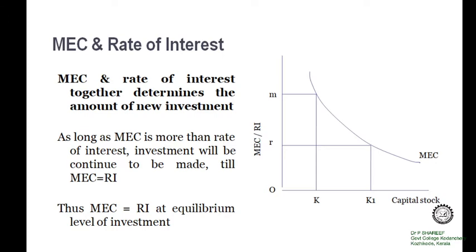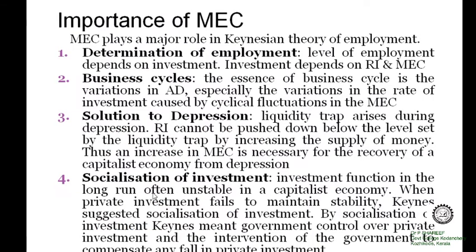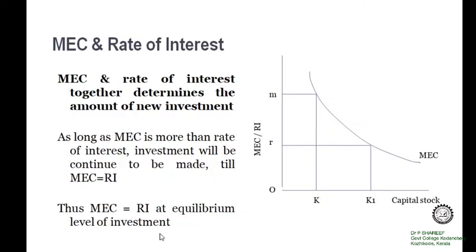Now, investment depends upon MEC and rate of interest. Marginal efficiency of capital and rate of interest together determine the amount of new investment. Investors will continue to invest more as long as MEC is greater than the rate of interest. At the equilibrium level of investment, MEC will be equal to the rate of interest, which is shown in the diagram.